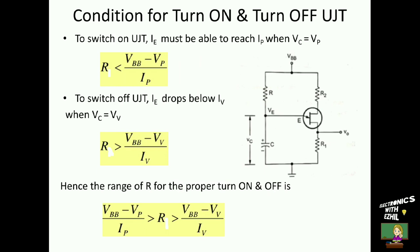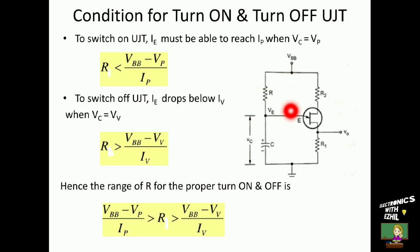The conditions for turn-on and turn-off of UJT: to switch on UJT, the emitter current IE must equal the peak current IP when VC equals VP. When VC equals VP, the voltage at the emitter is VP and the current through the resistance is called IP, with VBB at the other end. The value of R must be less than (VBB − VP) / IP for proper turn-on. For proper turn-on and turn-off, the R value must lie between these two bounds.